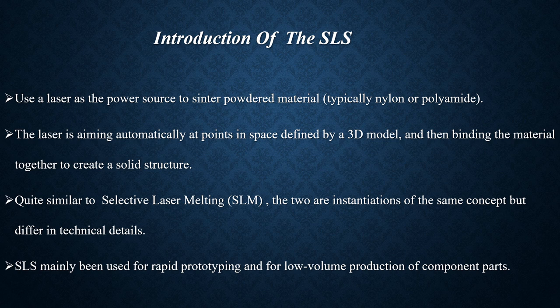The laser binds the material together to fabricate a solid structure. The 3D model usually comes from a CAD file such as SolidWorks. SLS is quite similar to SLM, which is selective laser melting — both have the same concept but differ in technical details. In SLM, the material is fully melted rather than sintered, allowing different properties such as crystal structure, porosity, and so on.